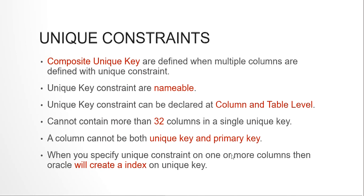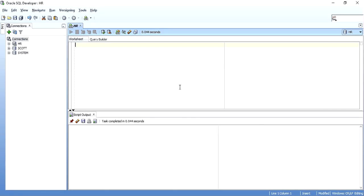Unique key constraints can be declared at the column level or the table level. At the column level it applies to a single column; at the table level you can declare a composite unique key. A composite unique key cannot span more than 32 columns — that is Oracle's limit. Also, a column cannot be both a unique key and a primary key; it must be one or the other. Importantly, when you create a unique key in Oracle, it implicitly creates a unique index on that column or set of columns.